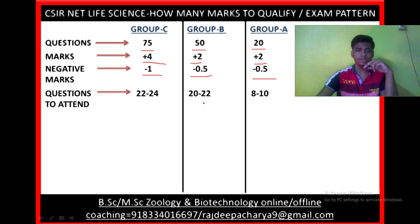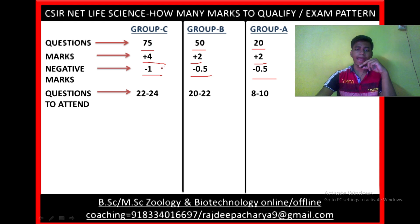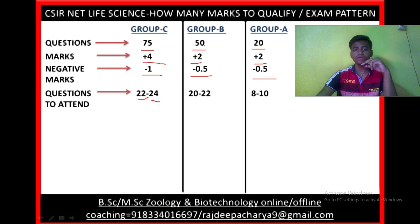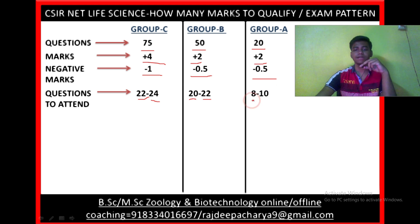You have to choose each question very carefully because there is negative marking. In my opinion, you should attempt a minimum of 22 and a maximum of 24 questions from Group C. For Group B, attempt a minimum of 20 and a maximum of 22 questions. For Group A, attempt a minimum of 8 and a maximum of 10 questions.